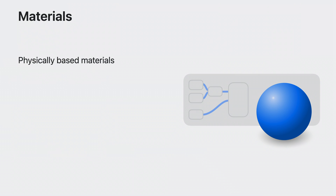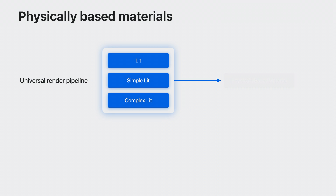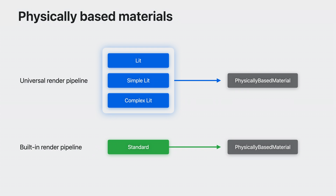Three categories of materials are translated: physically-based materials, custom materials, and some special effect materials. Materials based on Unity's physically-based shaders translate directly to RealityKit. If you're using the universal render pipeline, you can use any of the lit, simple lit, or complex lit shaders in your materials. With the built-in pipeline, you can use the standard shader. All of these are translated to a RealityKit physically-based material.